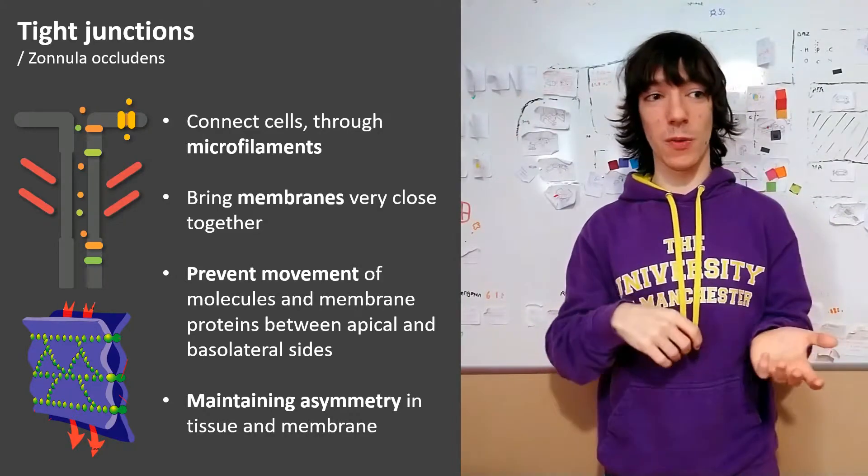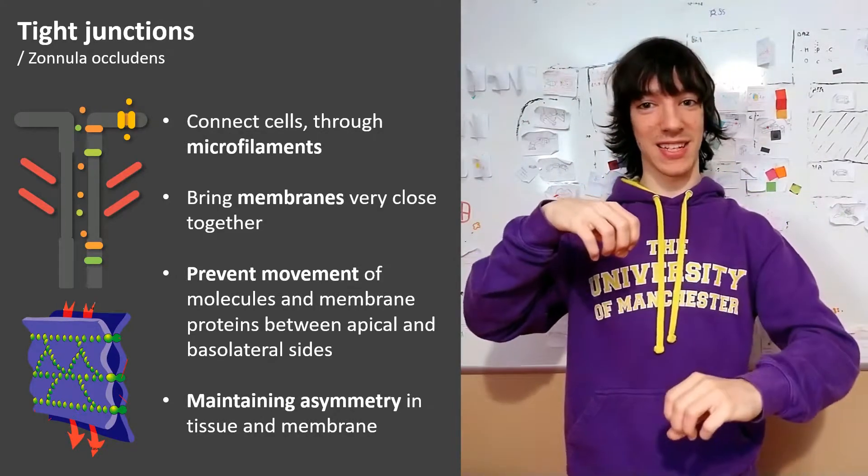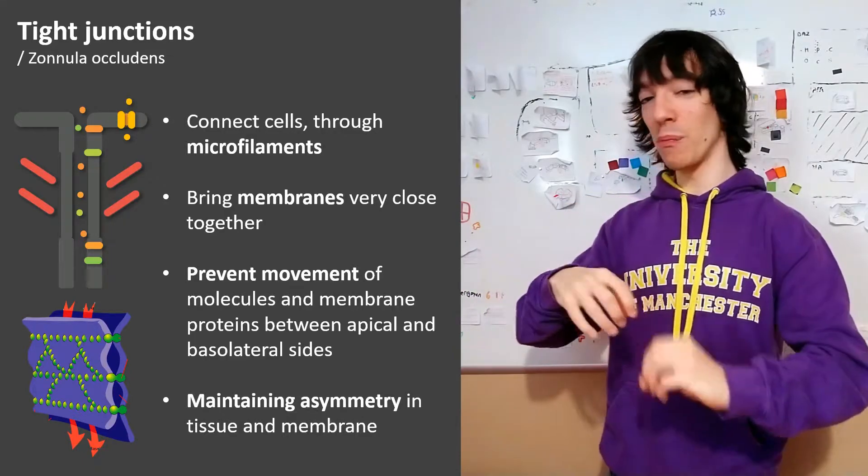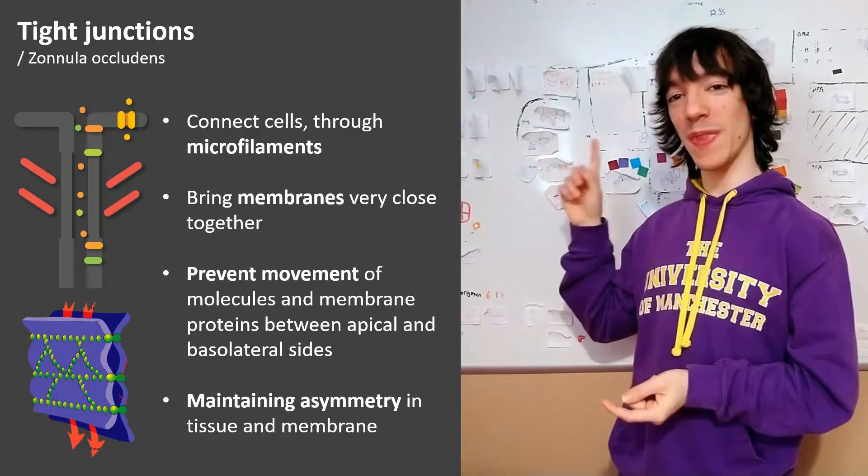They could mix up and end up in sites where we don't really need them, where they could take the nutrients that we had just moved to the other side and bring them back inside the cell. We don't want that happening. We only want them in the apical side.